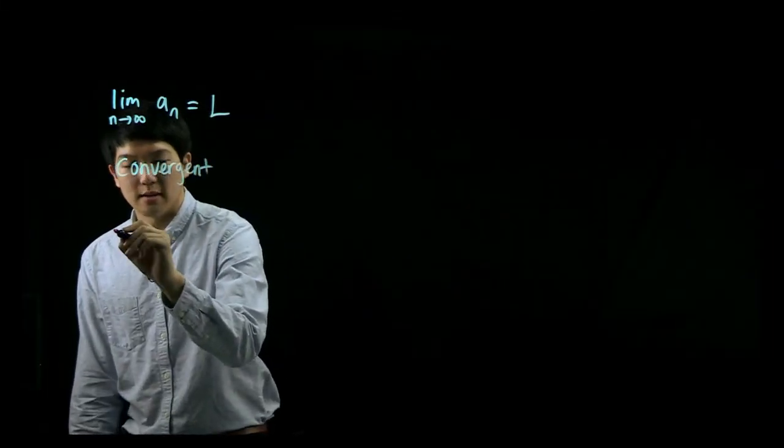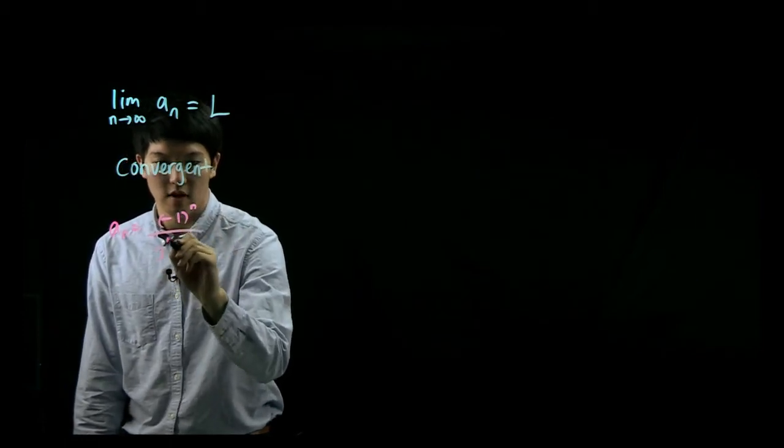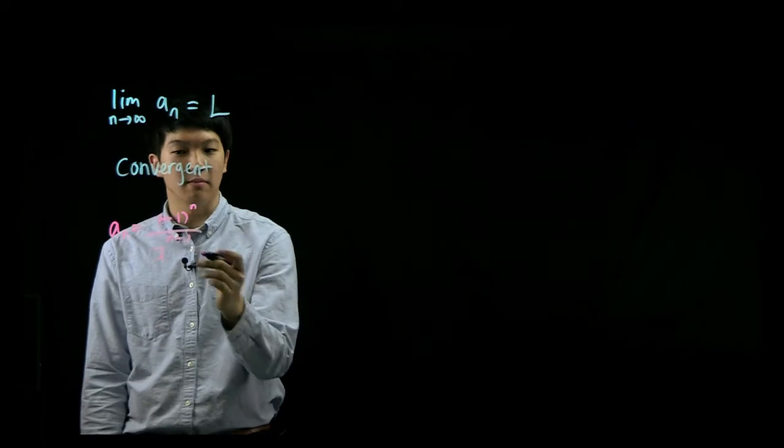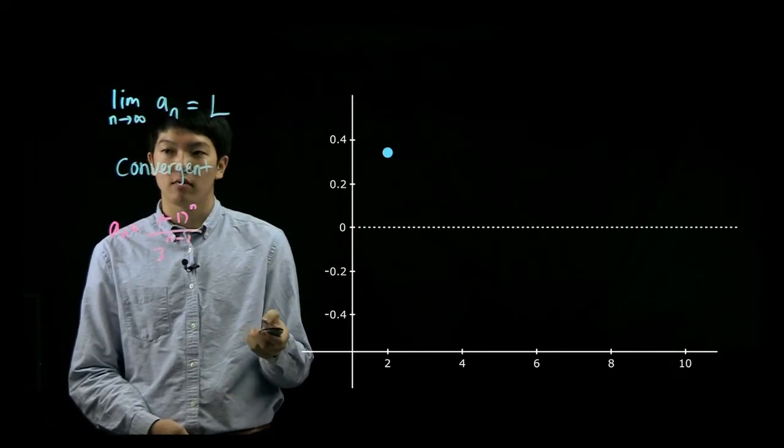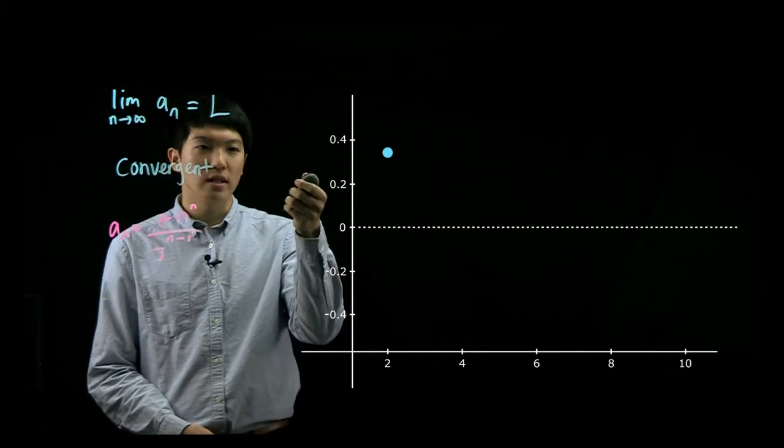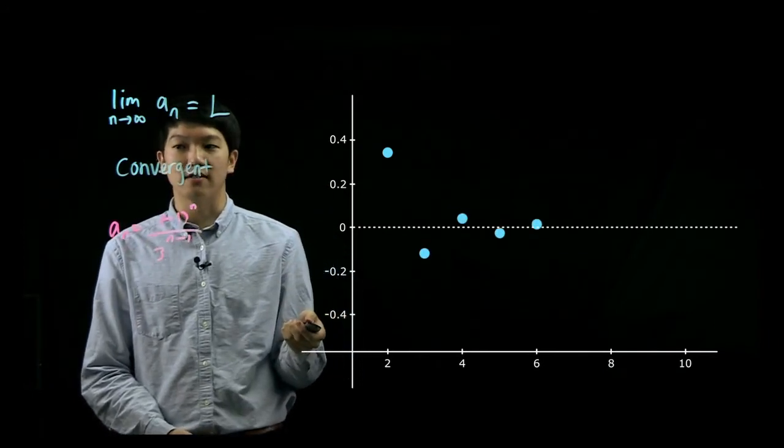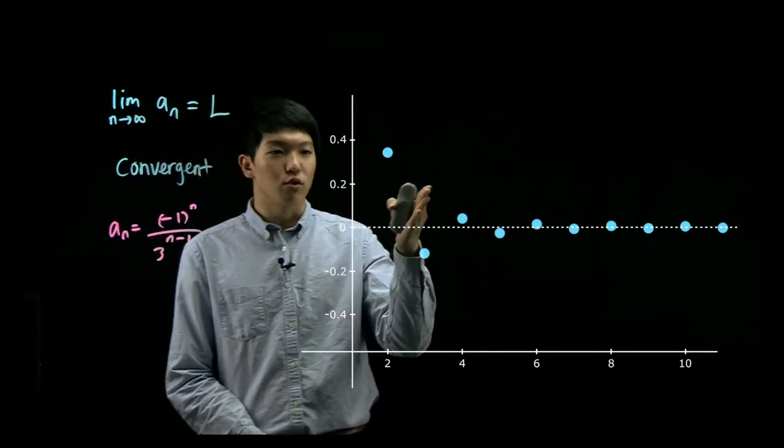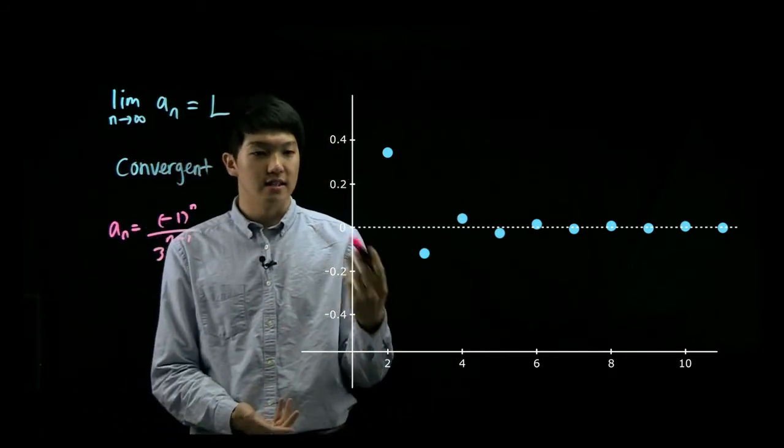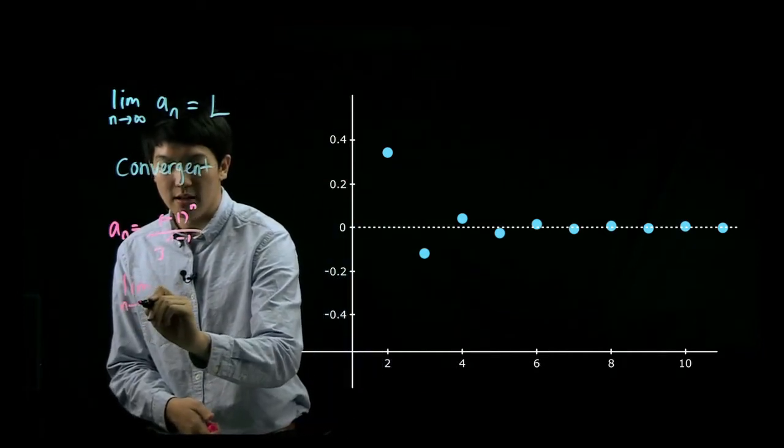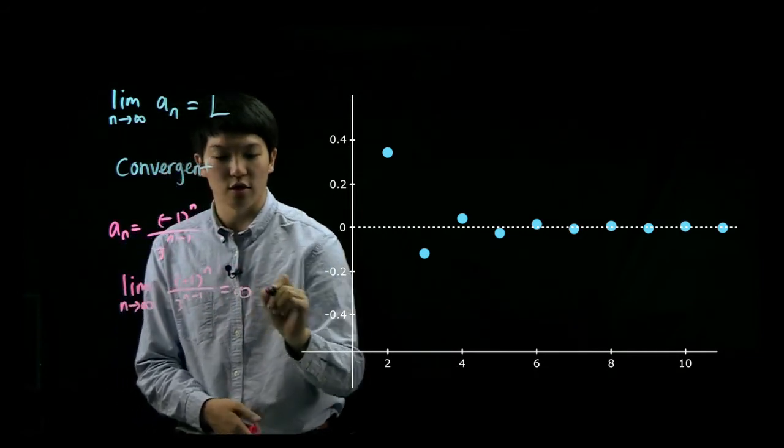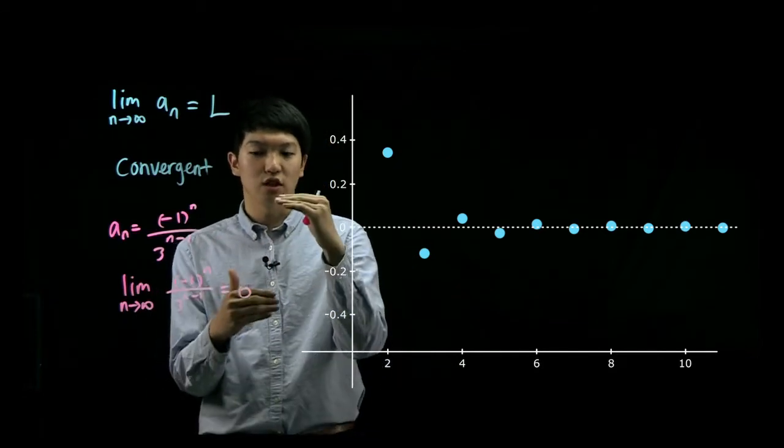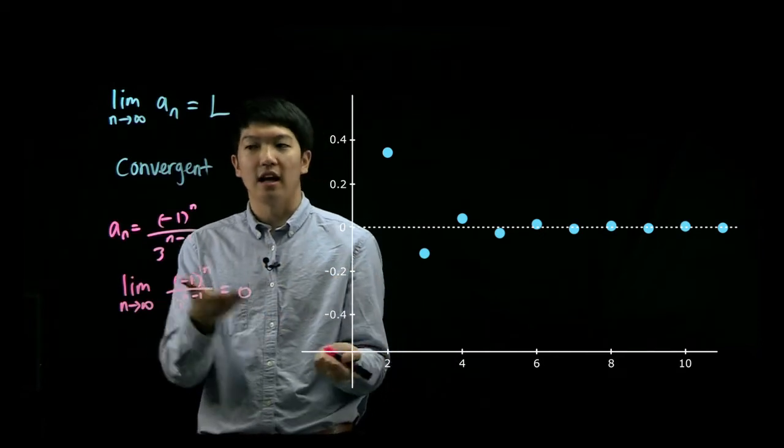So what does convergent exactly mean? Let's begin with a simple example. Notice that this is very similar to our previous example, except for the negative one. And let's take a look at a graph of this sequence. As you can see, the points are alternating from positive to negative, positive to negative. And you can see that it's approaching zero, correct? So that zero, we can write limit of n goes to infinity for this particular sequence was actually approaching zero. And the points were converging to a single point, meaning that this was convergent.